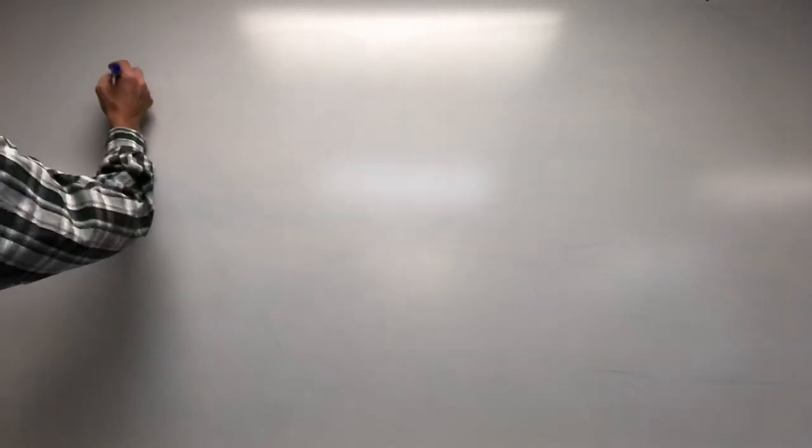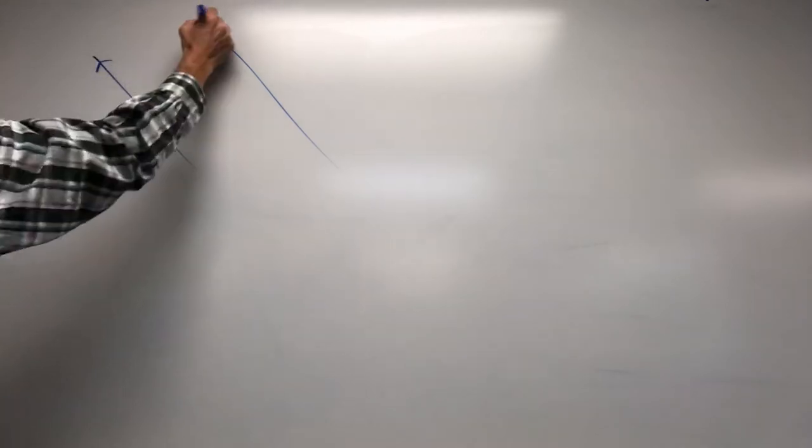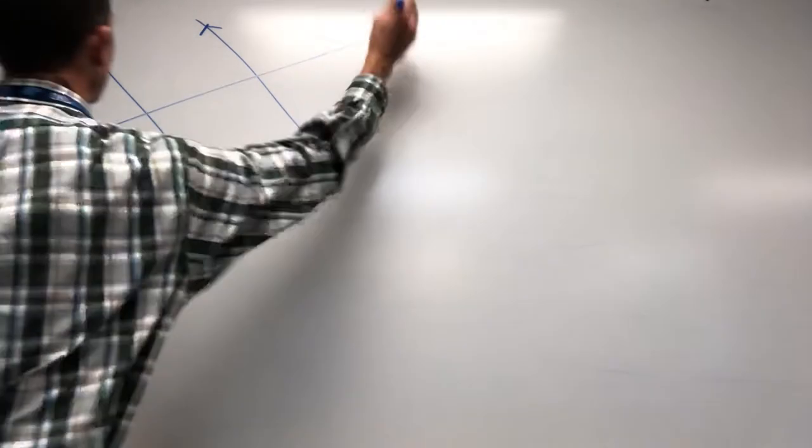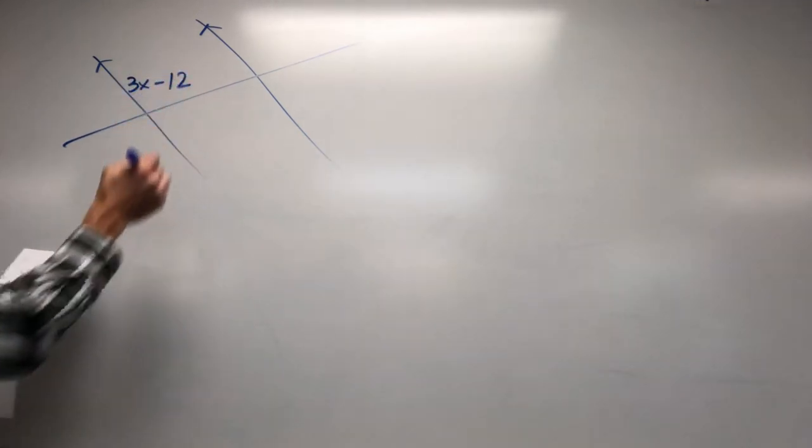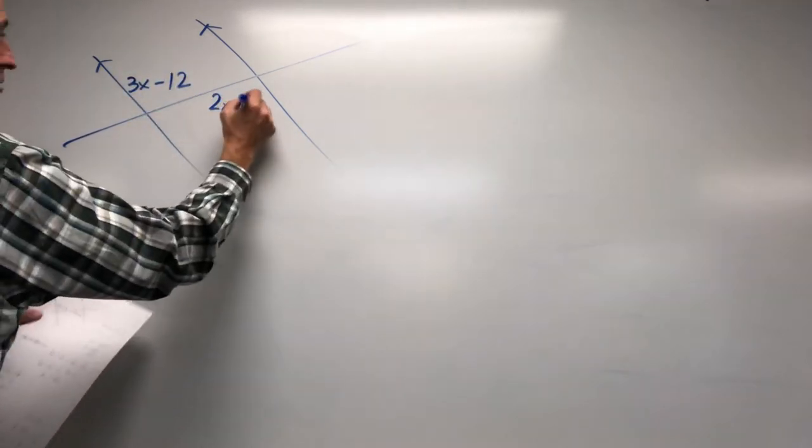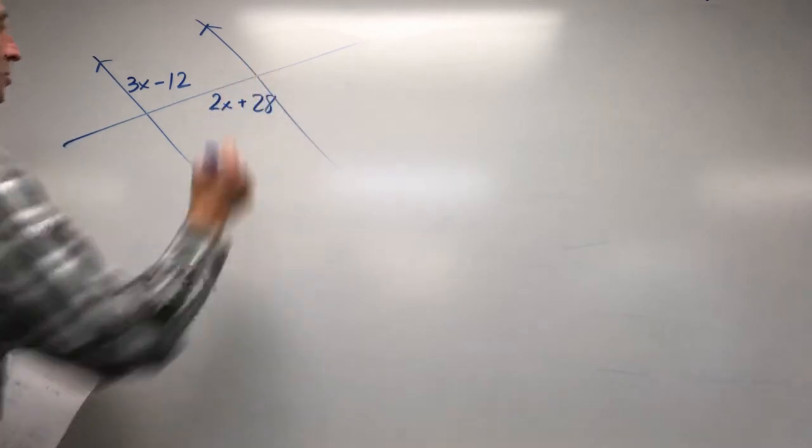What they do on your assignment is they'll draw your lines kind of different directions. So here's some parallel lines, but kind of running a little bit north and west on us. We still have a transversal that's going to run through there. Let's get rolling. Alright, 3x minus 12, 2x plus 28.